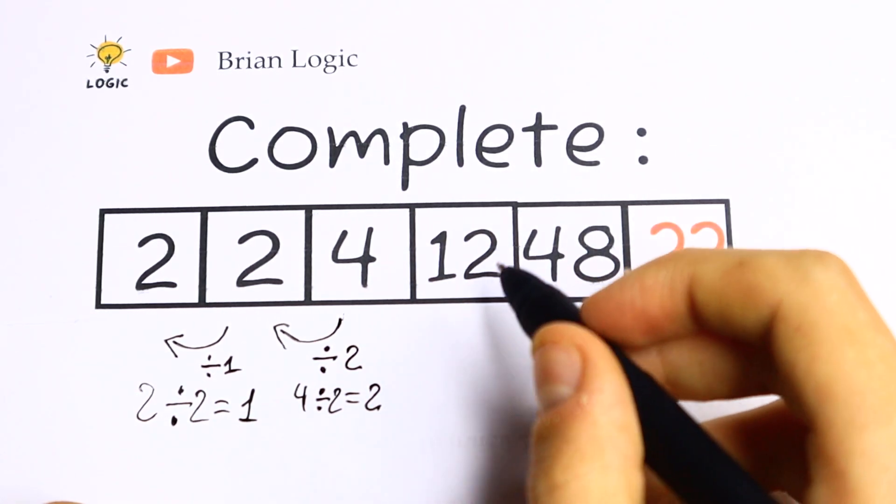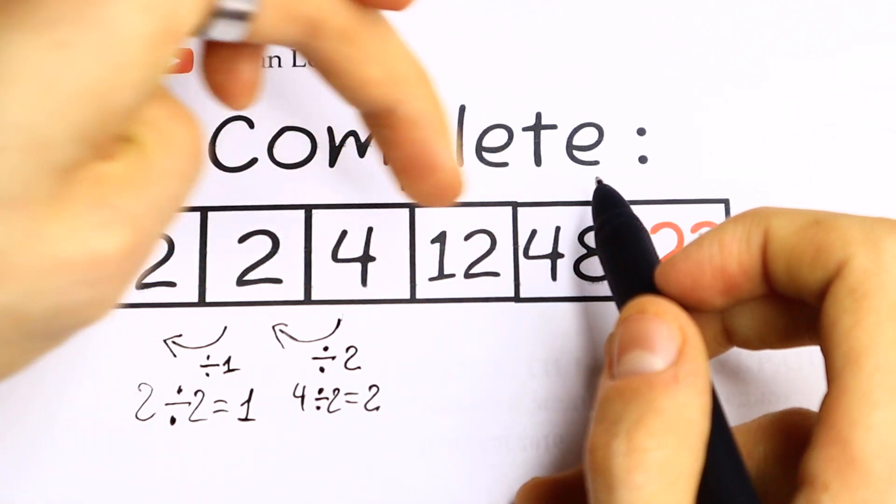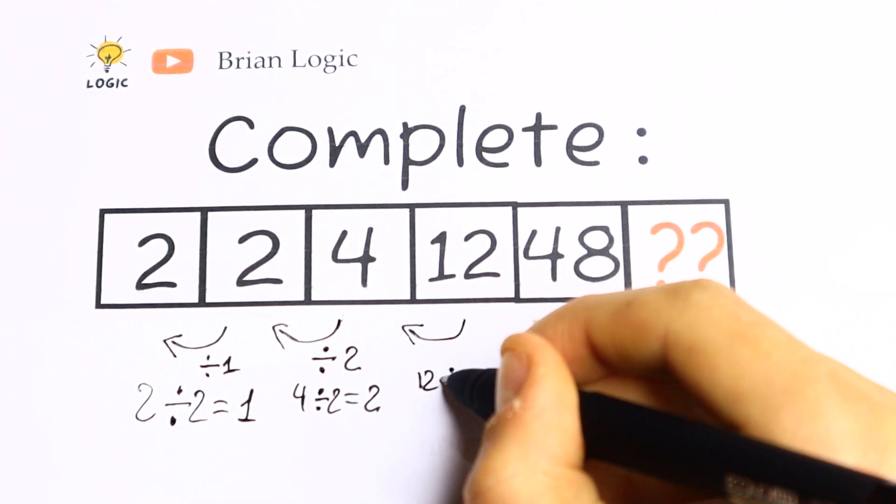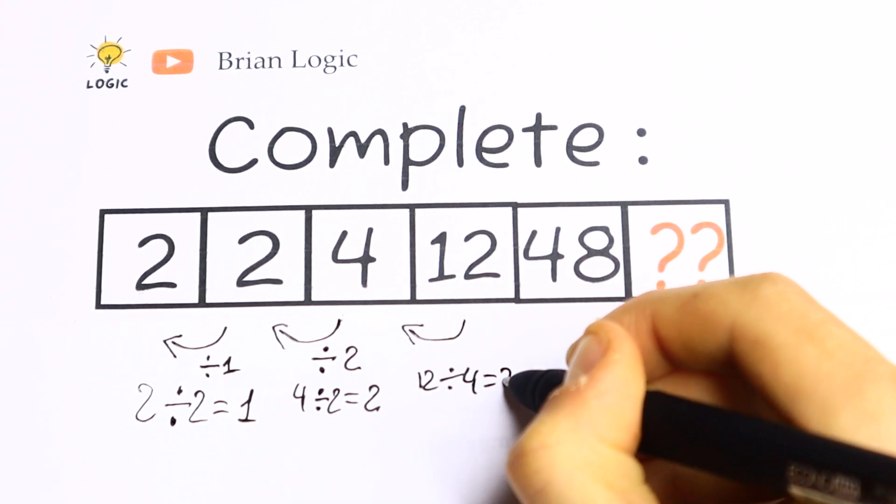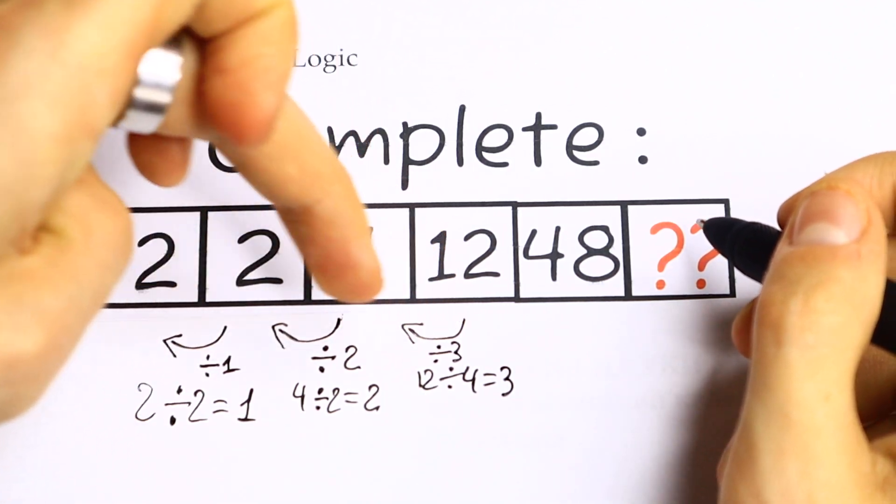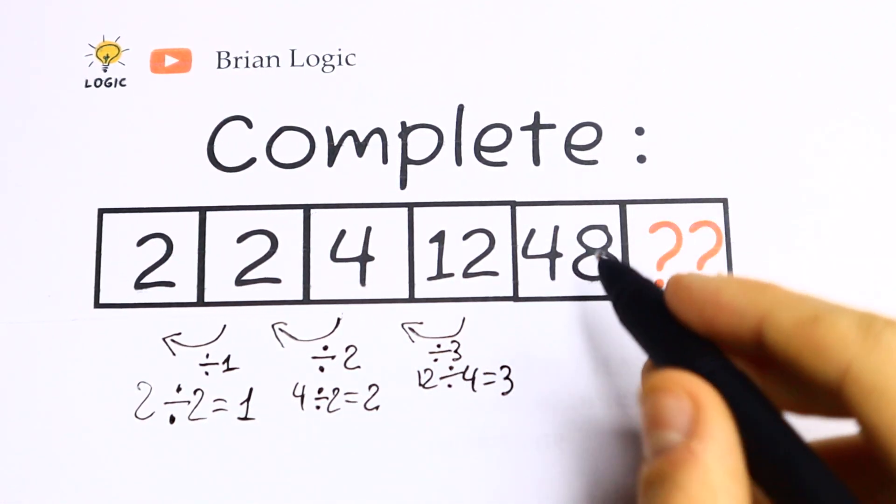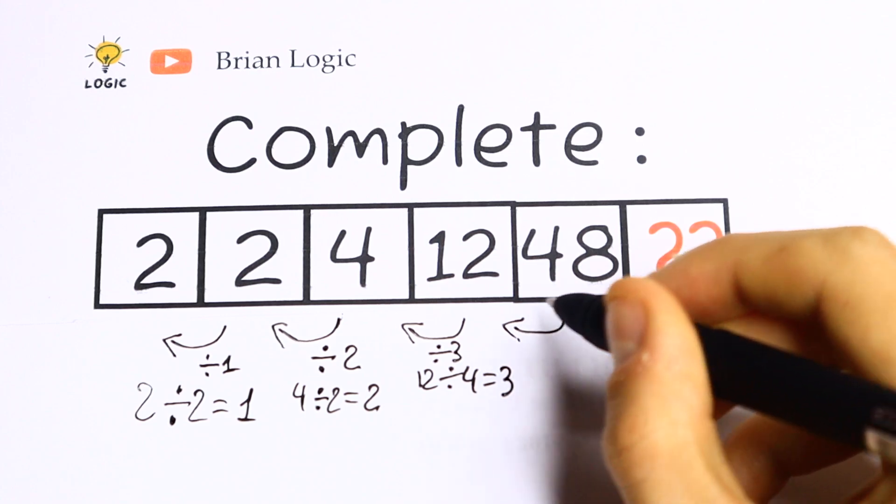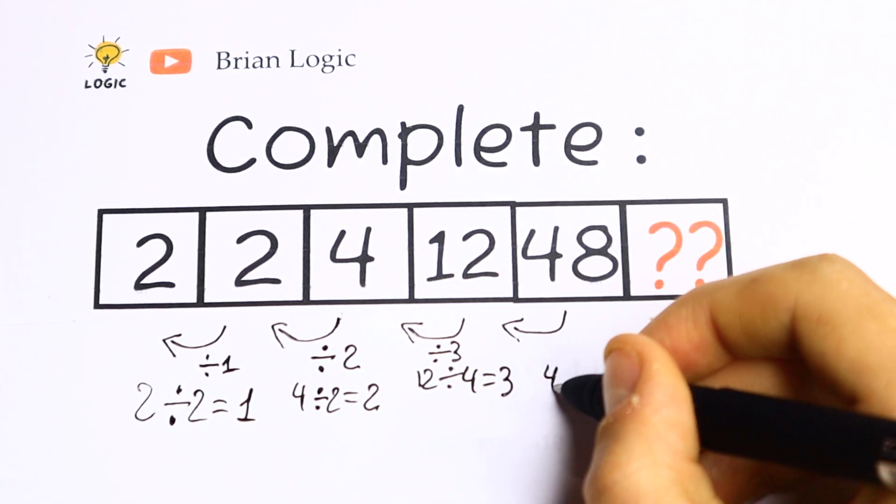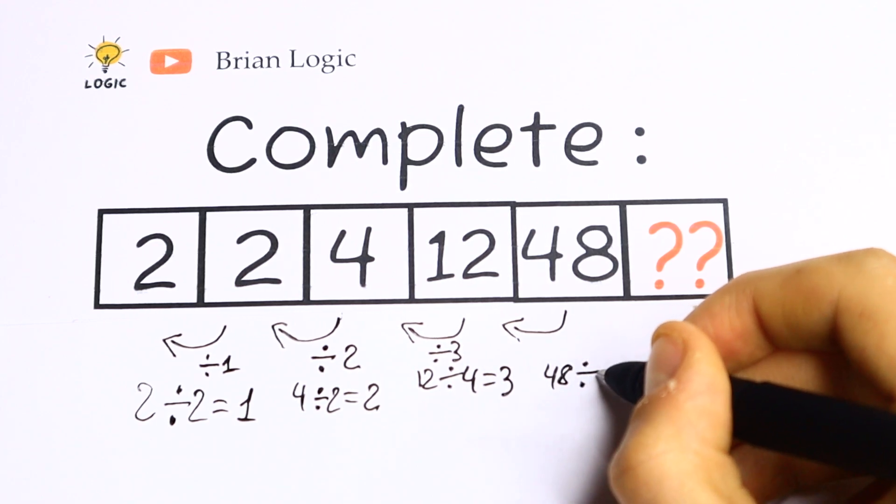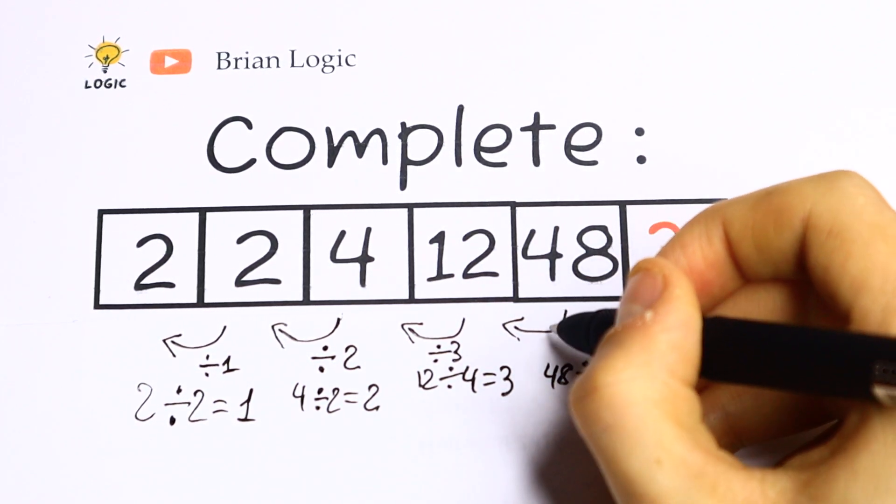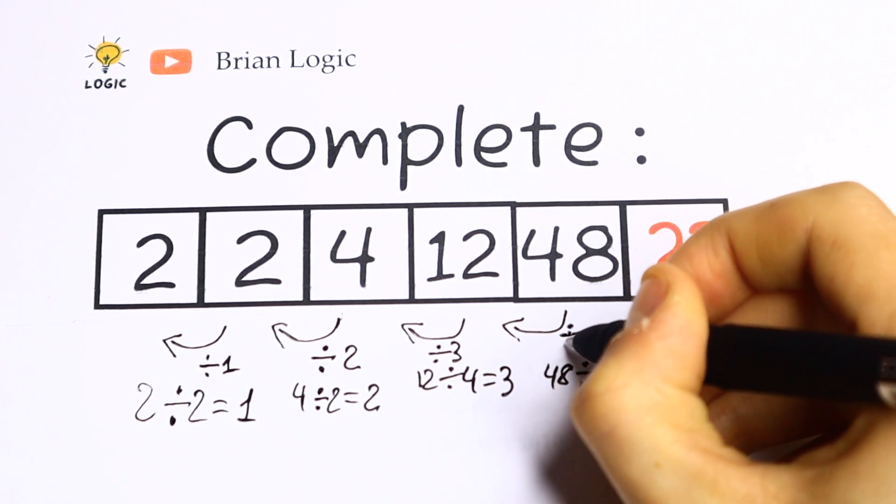What are we going to do next? Let's check this same logic. Let's divide the fourth number by the third one. 12 divided by 4 equals 3. So we divide by 1, by 2, by 3. Let's check the same logic with the fifth number. 48 divided by 12 equals 4. So this number we divide by 4.